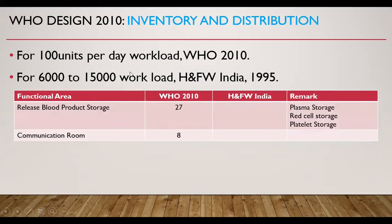The Inventory and Distribution subdivision has the following subsections: release and blood product storage — these are blood products which have already been tested for TTI — requiring 27 square meters, and a communication room requiring 8 square meters.